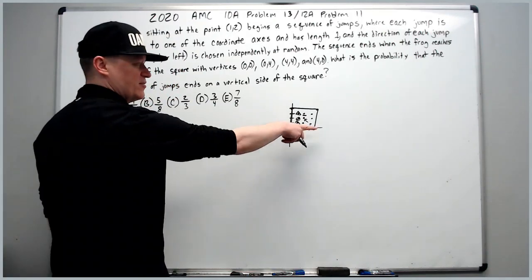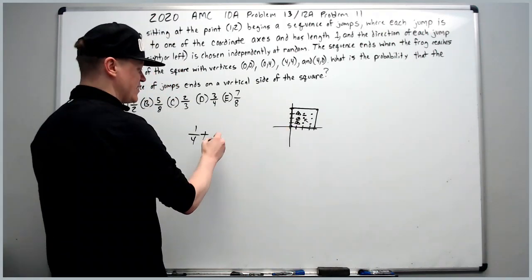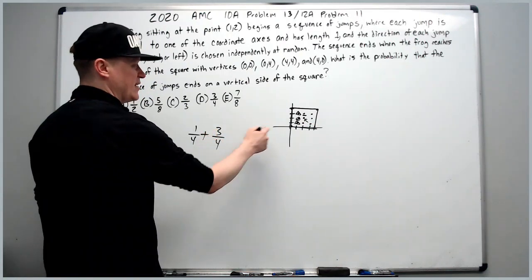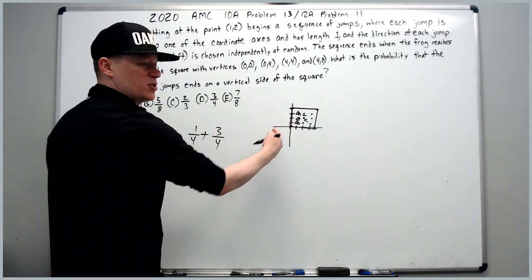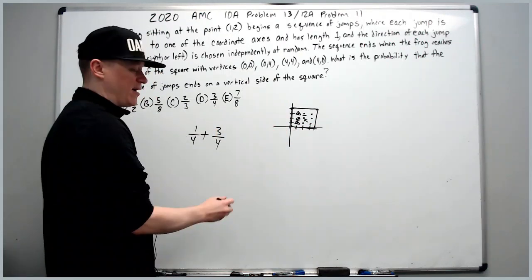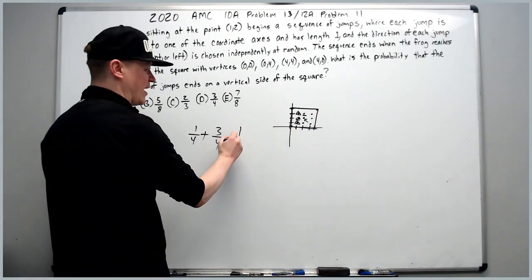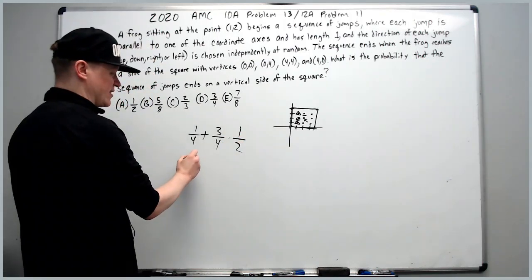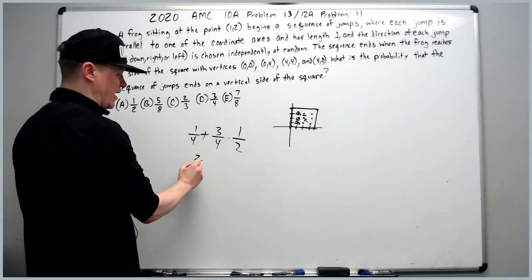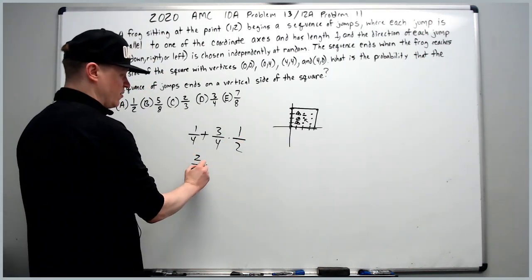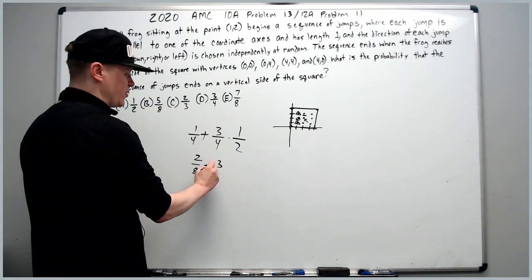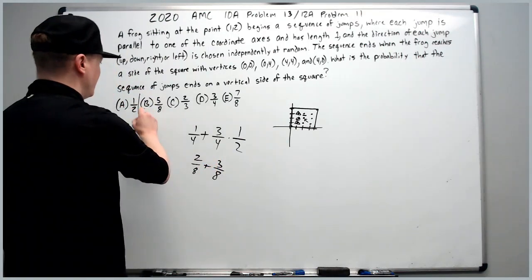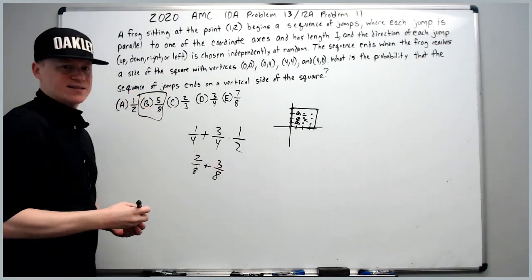Therefore, the rest is simply the 3/4 chance the frog doesn't go directly to the left times 1/2. Adding it all up: 2/8 plus 3/8 is 5/8.